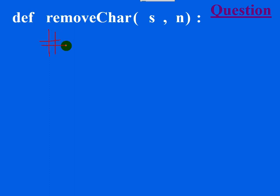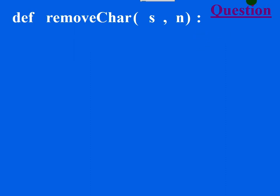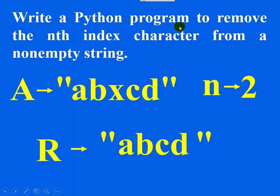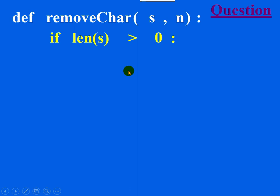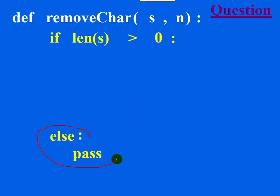Don't forget the docstring — it may carry marks in the marking scheme, so write it. Since it must be a non-empty string, write: if len(s) > 0, only then remove the nth index character. Otherwise, use 'else: pass' — pass is an empty statement meaning nothing to do.